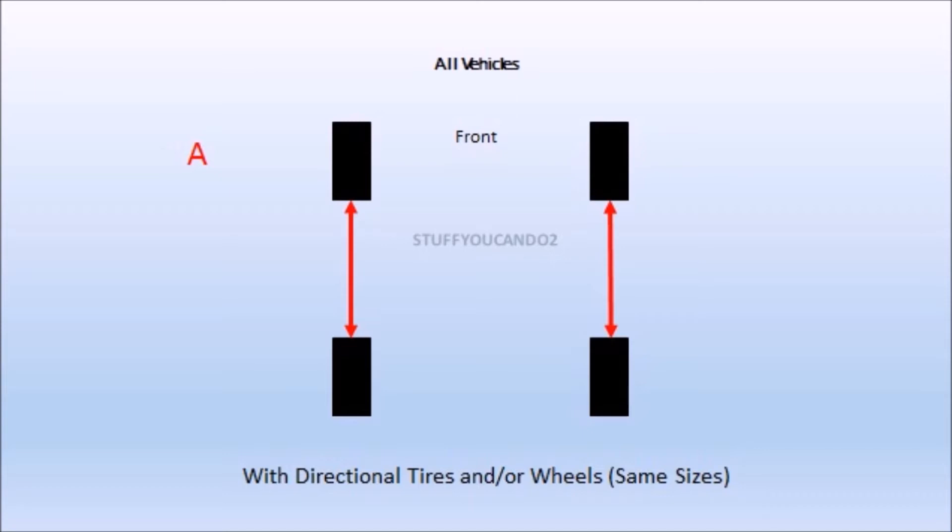This first pattern is a simple pattern where you would only move the front wheels to the back and the back wheels to the front. The only case you'd really want to do this in is if you have directional tires that are all the same size. When I say directional I mean that the tires are only able to rotate in one direction. This is usually indicated by an arrow on the tire.